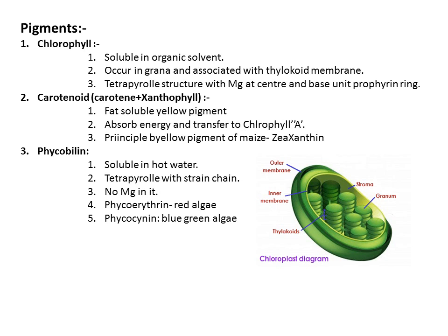The second pigment is carotenoid, which is a mixture of carotene and xanthophyll — together called carotenoid. Carotenoid is a fat-soluble yellow pigment. It absorbs energy and transfers it to chlorophyll A, basically acting as an energy absorber. It is also the principal yellow pigment of maize; the answer is zeaxanthin (scientific name of maize being Zea mays).